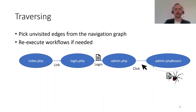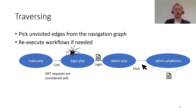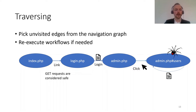For traversing, it's important to ensure the application is in a good state before we add any values. So if we want to inject a new user, we first go back to what we consider a safe state — a GET request — and then the scanner resubmits the login form, clicks to generate the element, and only then inserts the new value. This ensures the server is in a good state before we inject any values. We re-execute the workflows if needed.